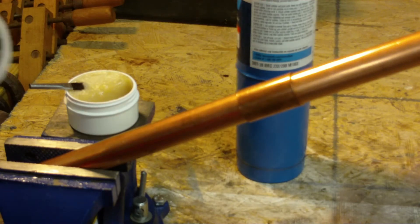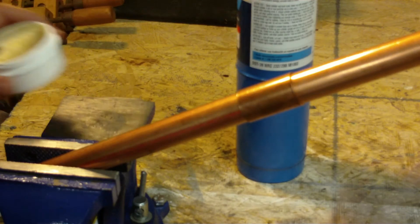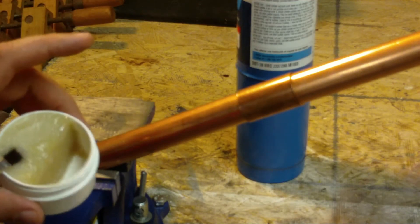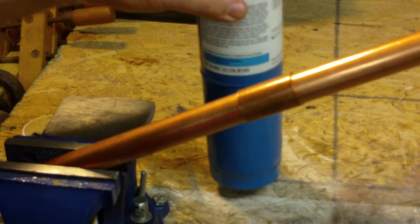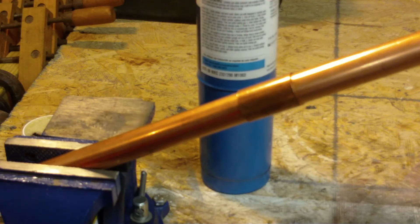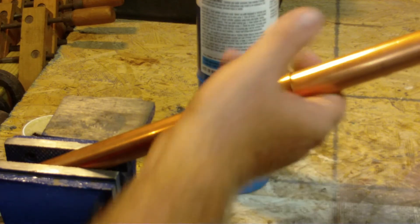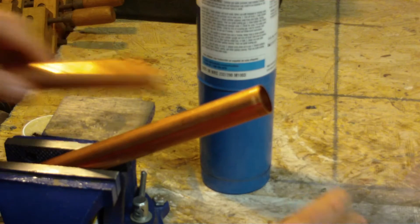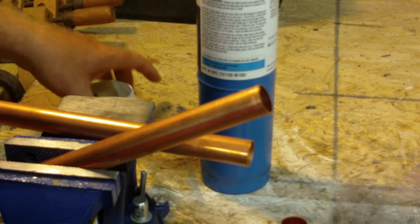What you want to use is some lead-free solder. Silver bearing solder is really good. You also want some flux and a propane torch. You don't have to use MAP gas for soldering, you don't have to use acetylene or oxygen - that's more along the lines of brazing. So all we're going to do tonight is learn how to solder some pipe together.